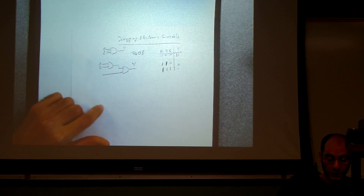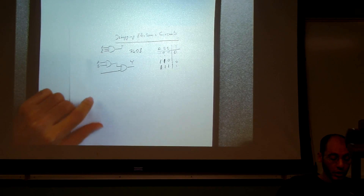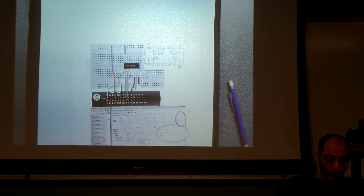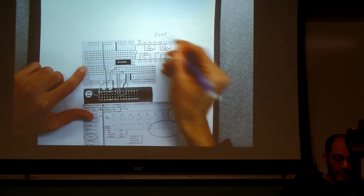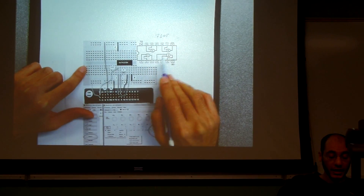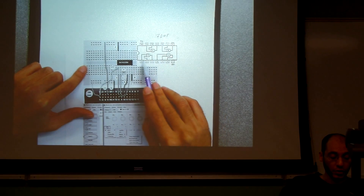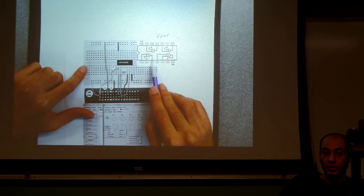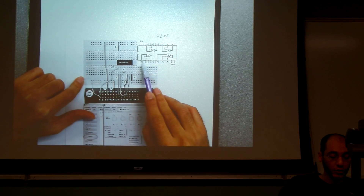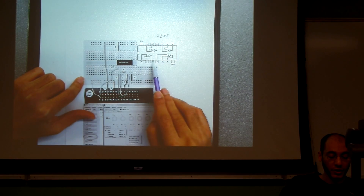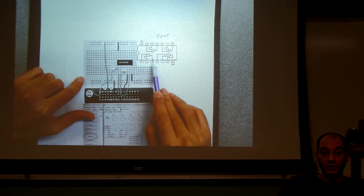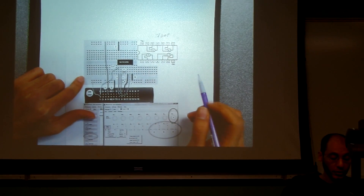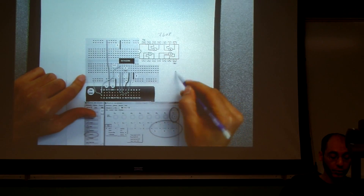The 7408 chip has four AND gates inside it. Each AND gate has two inputs, and the output is on the third pin. If you connect your inputs to pins one and two, you get your output at pin three. The output will be analogous to the truth table of the two-input AND gate. So how do we form a three-input AND gate from two-input AND gates?